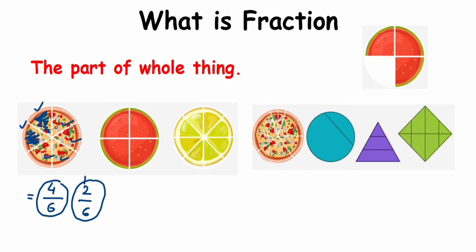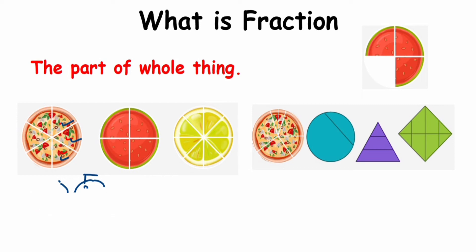The number you write on top is called the numerator, and the number you write at the bottom is called the denominator. Remember that.